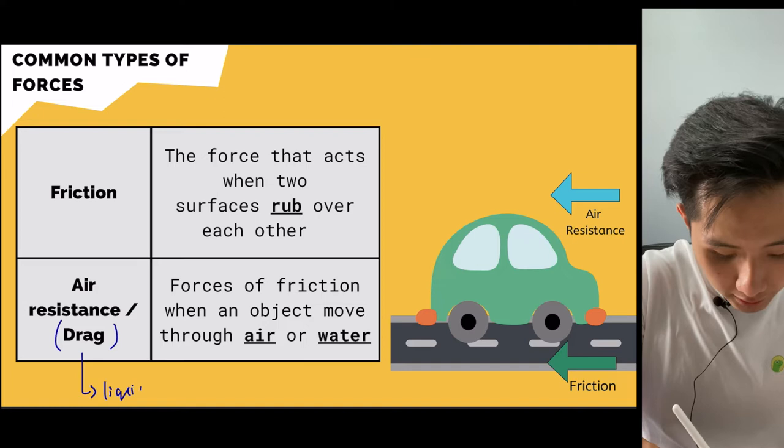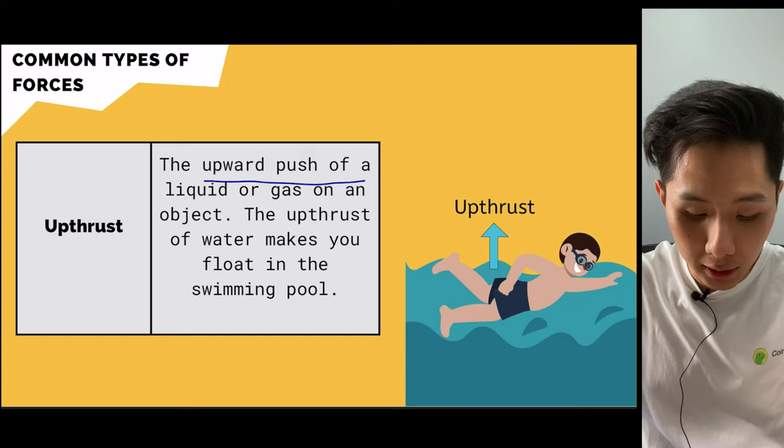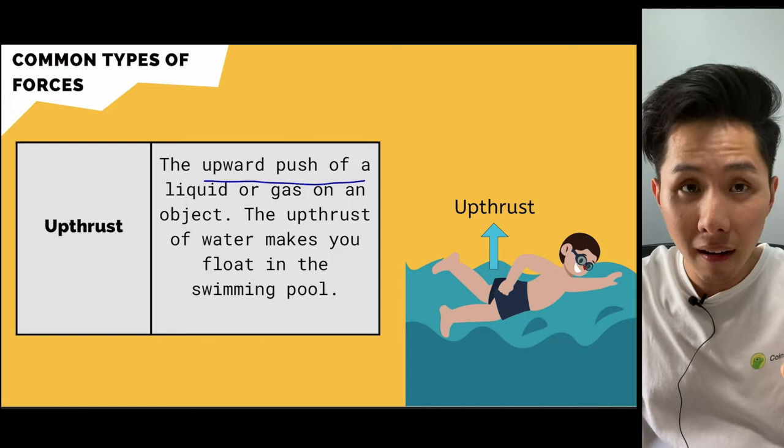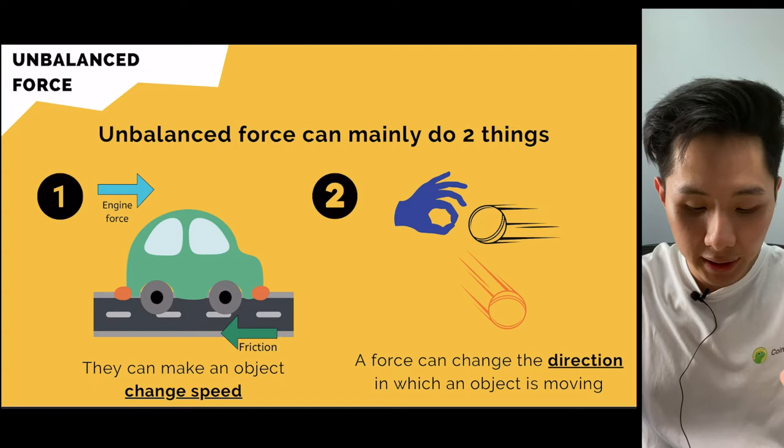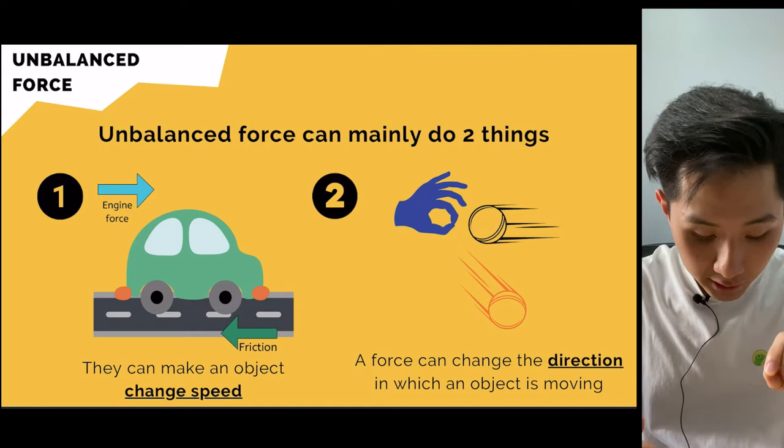The last type of force is upthrust. When you're swimming, you feel an upward push from the liquid. So here are five different types of force. Overall, when forces are unbalanced — meaning there is a stronger force in one direction — two things happen. First, it will cause the object to change speed. For instance, in the car example, if you want to accelerate the car, the engine needs to exert additional force to counter friction.